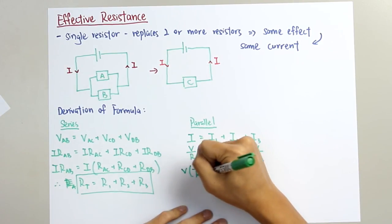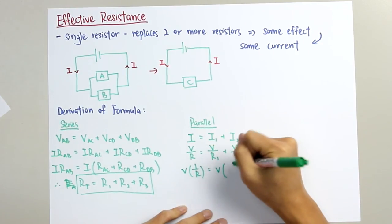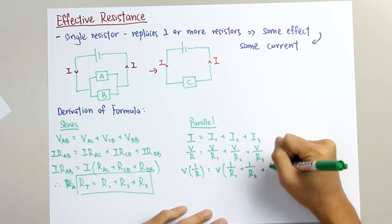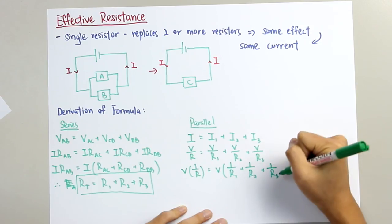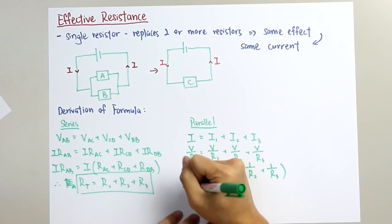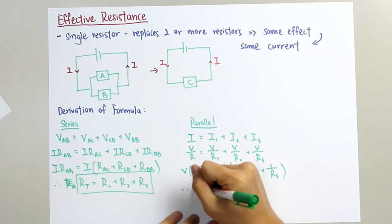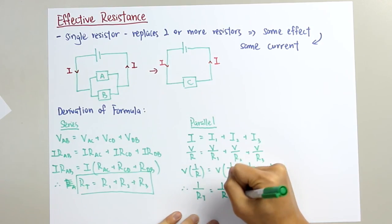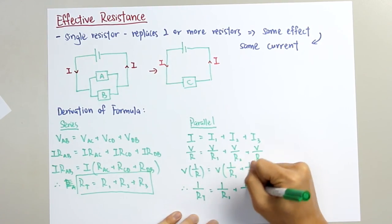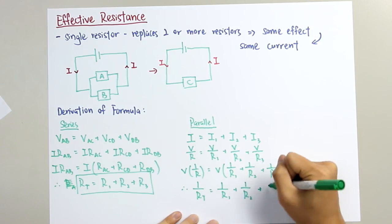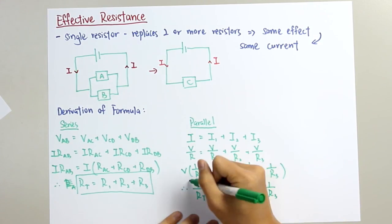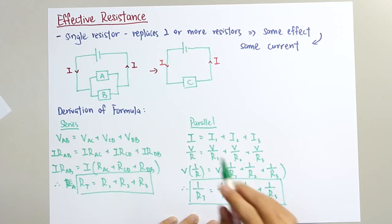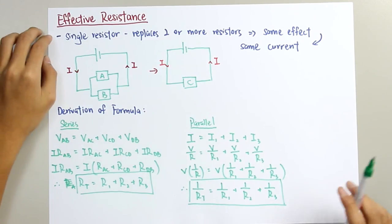So let's conclude that V over R total equals to V over R1 plus V over R2 plus V over R3. And this will be the formula for the effective resistance in parallel circuit.